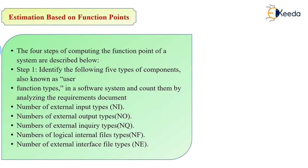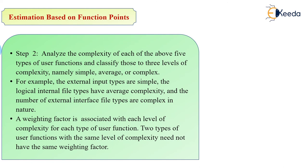Step 2 is to analyze the complexity of each of the five types of user functions and classify them into levels of complexity: simple, average, or complex. For example, external input types may be simple, internal logical files may have average complexity, and external interface files may be complex. A weighting factor is associated with each level of complexity for each type of user function. Two types of user functions with the same complexity level need not have the same weighting factor.